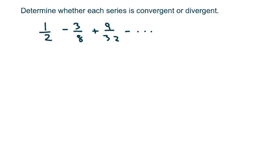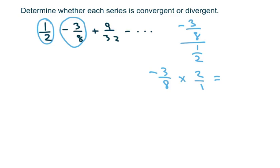And what we can do is take our one term here and divide it by the previous term. So I'm going to divide this out, which is the same as negative 3 eighths times 2 over 1, which is negative 6 over 8, which equals negative 3 fourths.